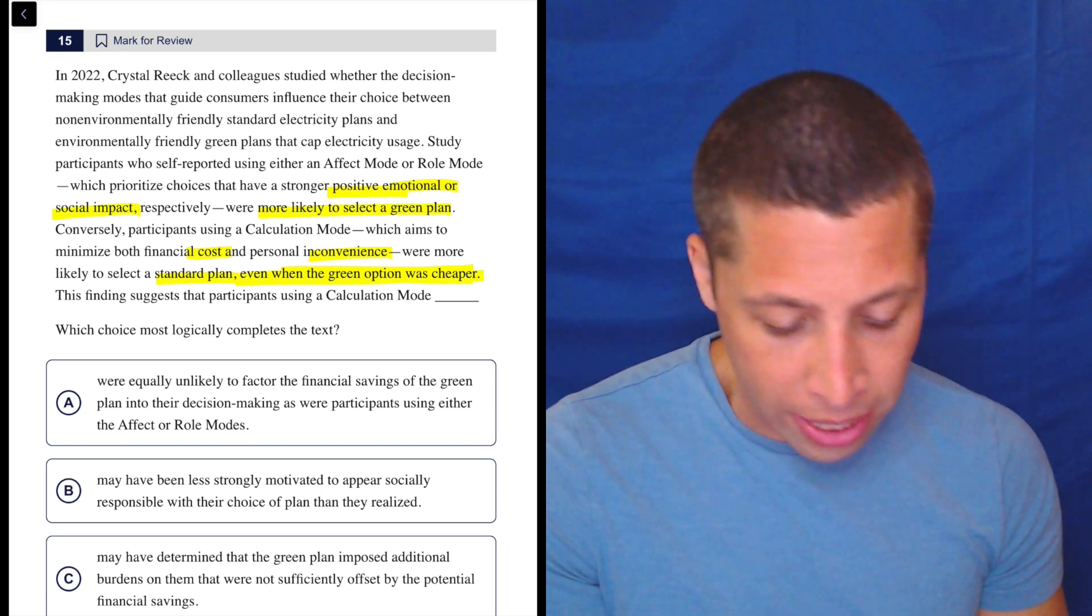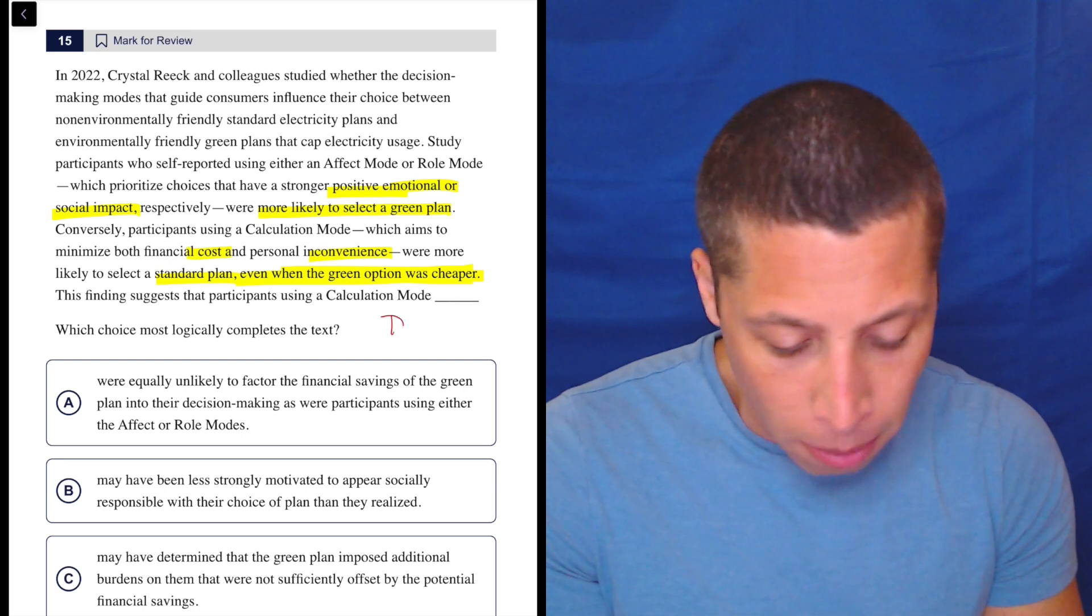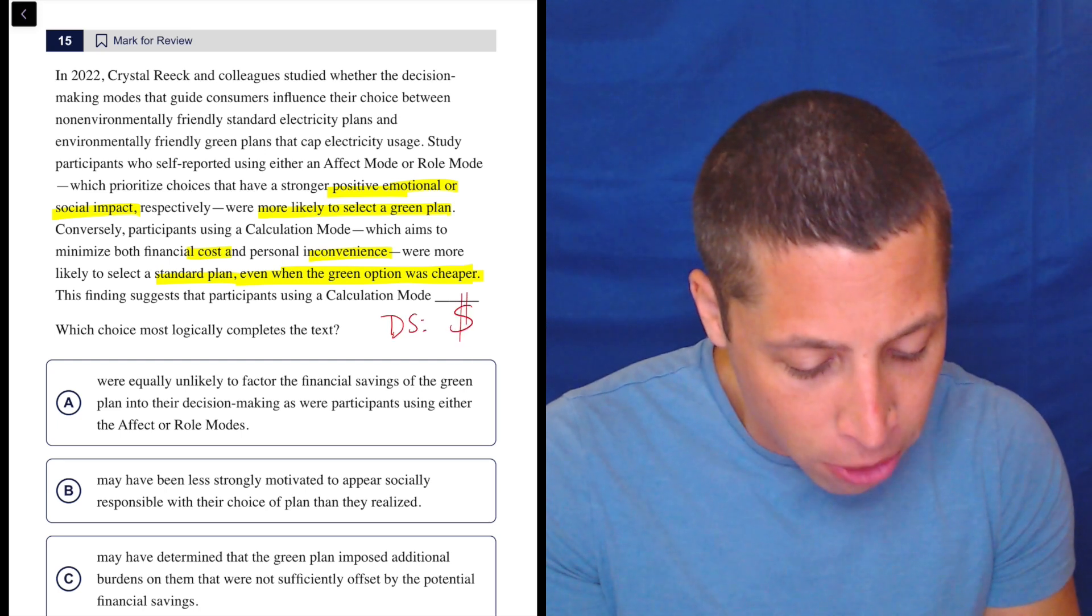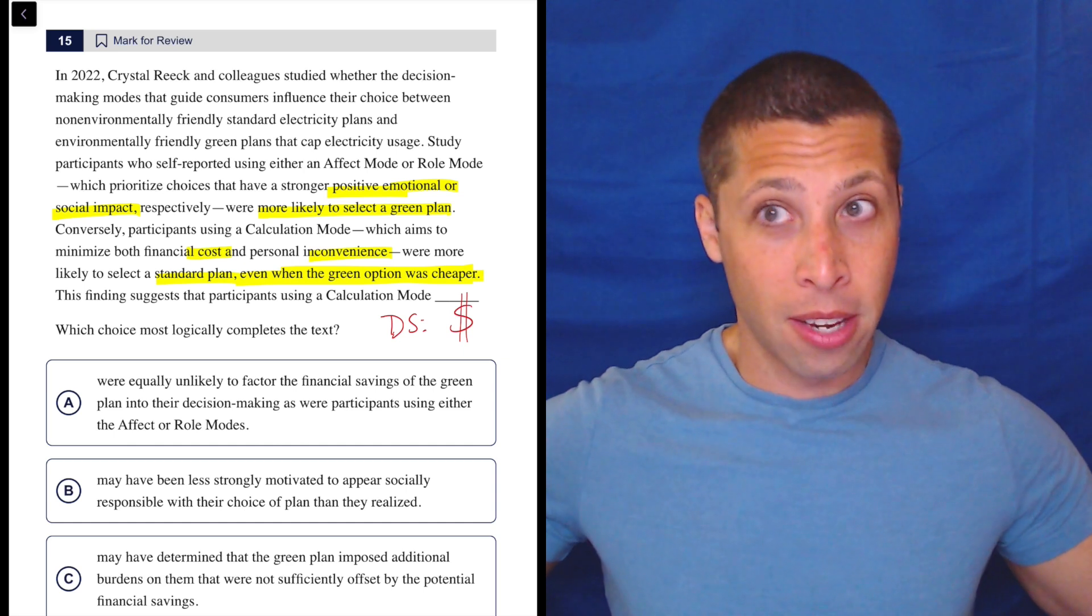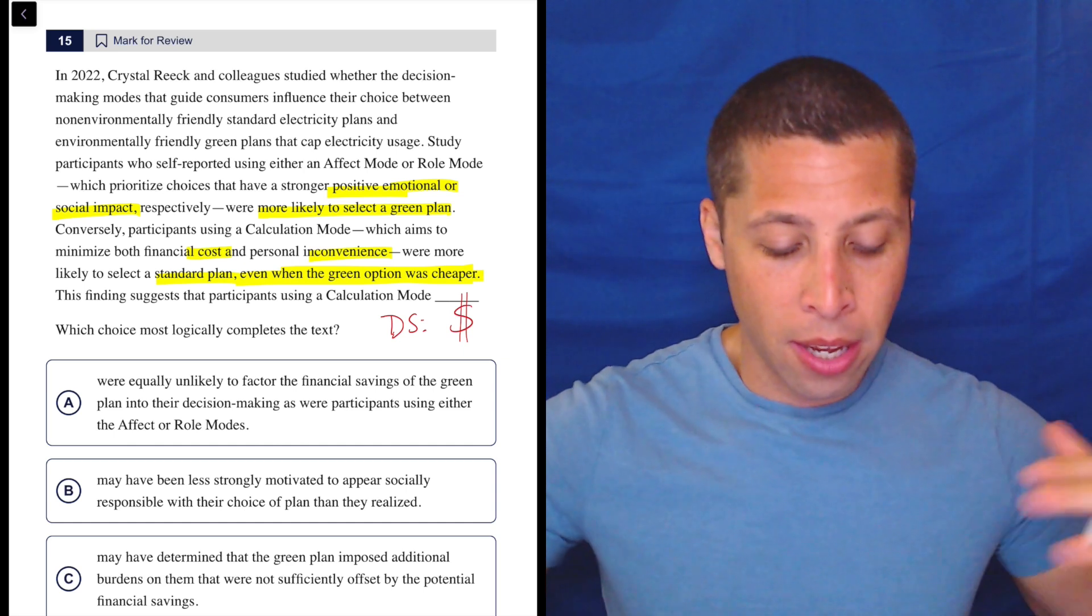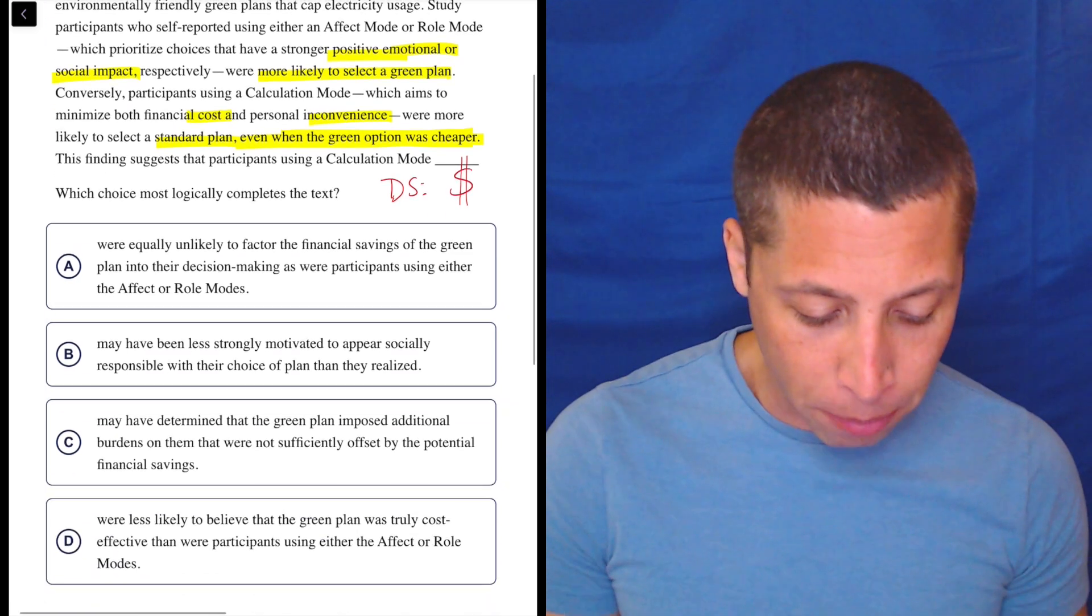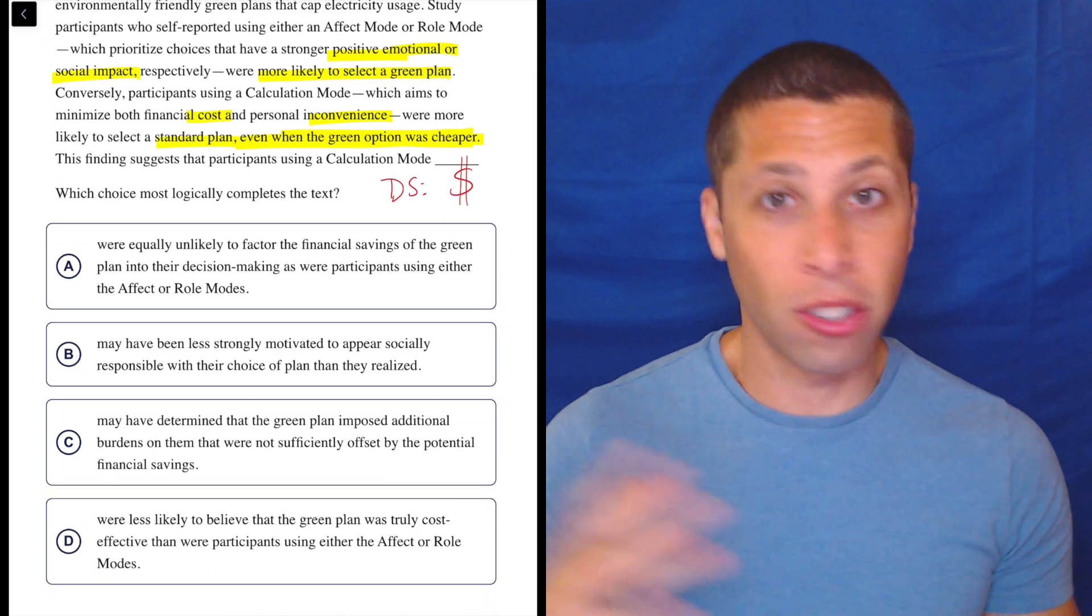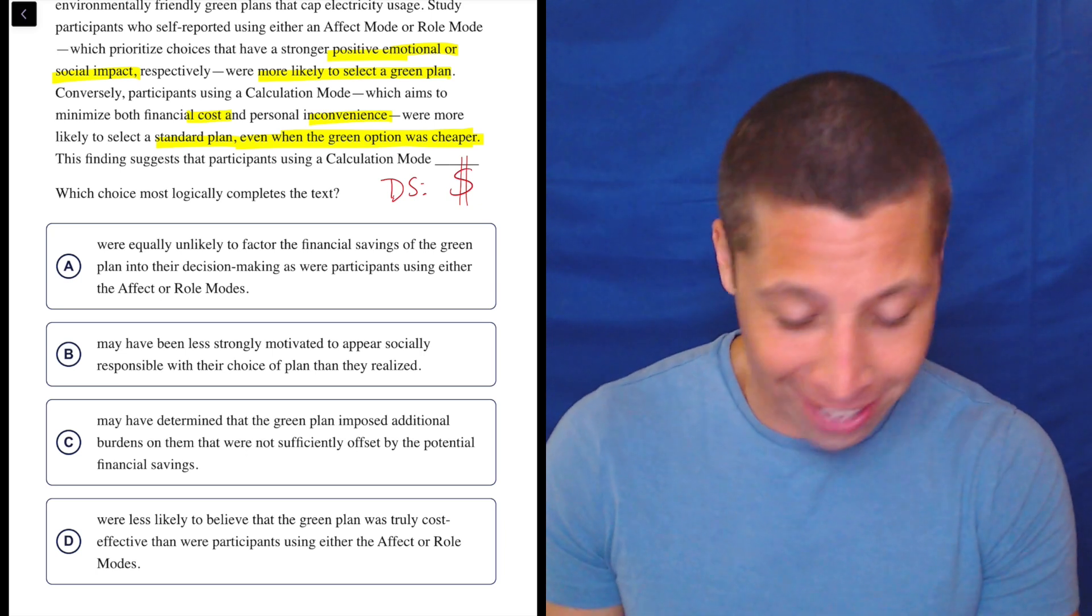This finding suggests that participants using a calculation mode. My guess here, dumb summary, is that this is going to have something to do with the cost because they're talking about lots of different things, but the money thing is the weird one to me. Let's see. We can always go back to certain parts of the question if we need, but I'm going to go to the choices now. I'm not going to reread. I'm going to see if anything starts to match with what I remember and what I highlighted.